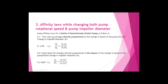For the combined law, relationship 3.1: flow rate Q changes directly proportional to the change in speed of the pump and the change in impeller diameter. Q is directly proportional to N times D, so Q1/Q2 = (N1 × D1)/(N2 × D2).